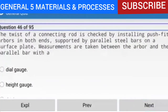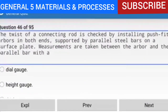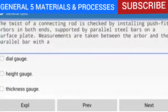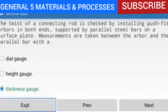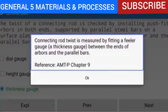Question 46 of 95: The twist of a connecting rod is checked by installing push-fit arbors in both ends, supported by parallel steel bars on a surface plate. Measurements are taken between the arbor and the parallel bar with a thickness gauge. Connecting rod twist is measured by fitting a feeler gauge — a thickness gauge — between the ends of the arbors and the parallel bars.